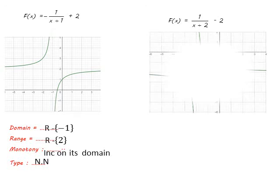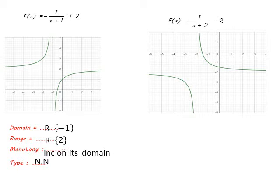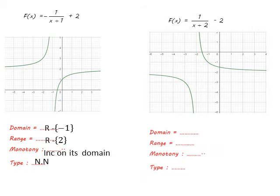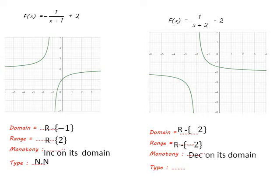For f(x) = 1/(x + 2) - 2, the point of symmetry equals (-2, -2). The function is shifted two units to the left on the x-axis and two units down on the y-axis. The domain equals ℝ except -2 and the range also equals ℝ except -2. The function decreases on its domain. It is neither even nor odd.